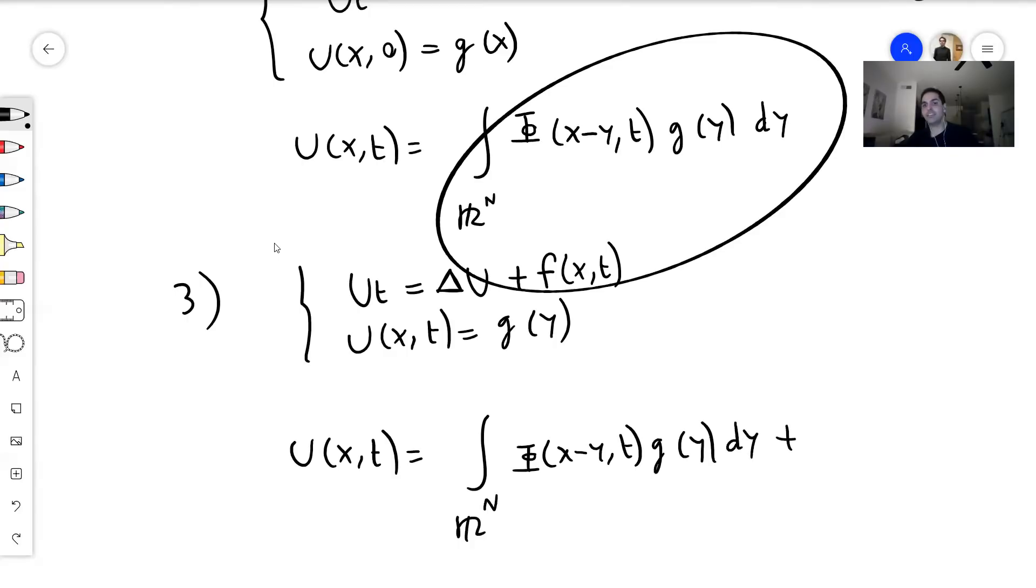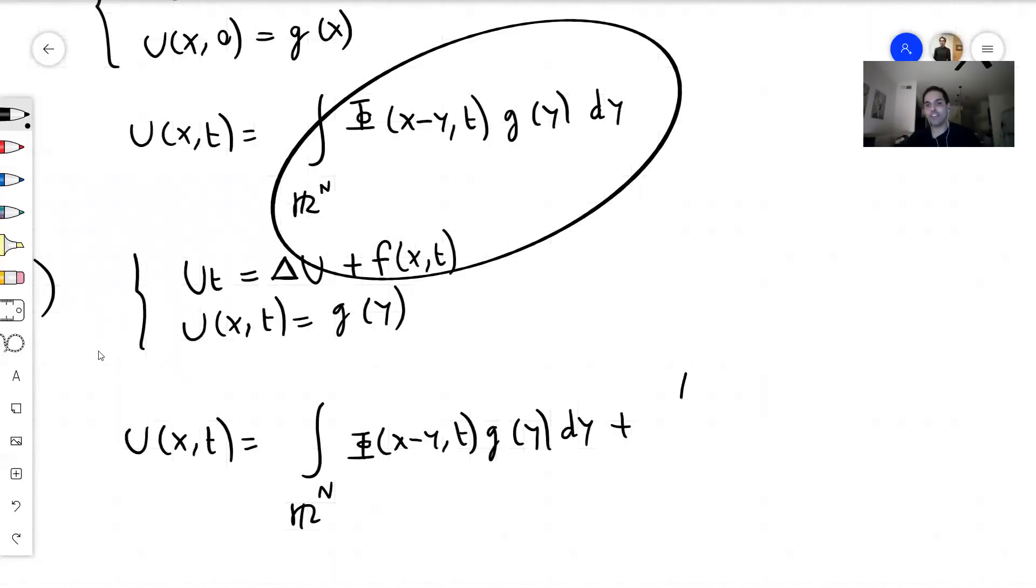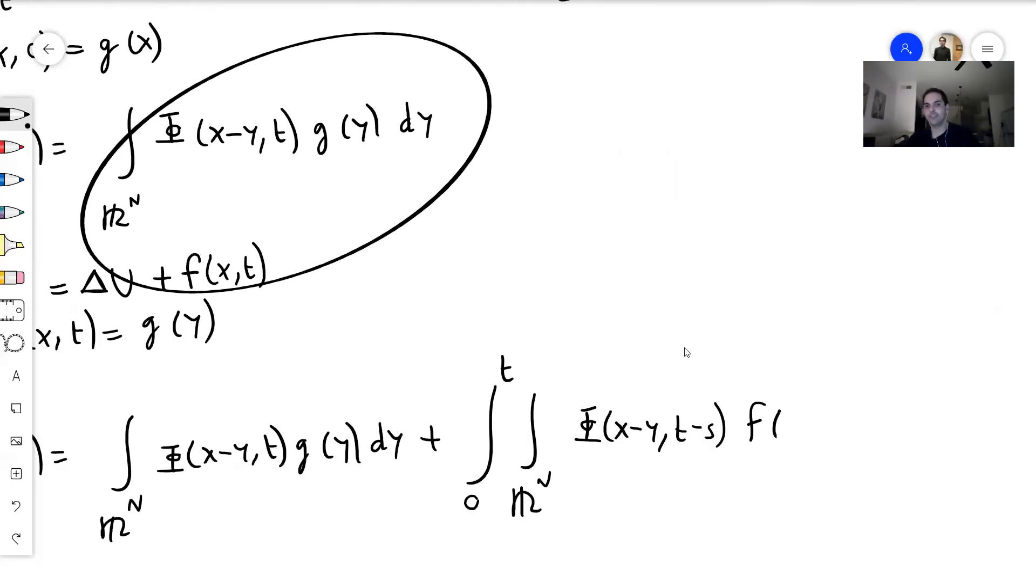plus the full convolution. So phi convolved with f, so really integral from 0 to t, integral over R^n of phi(x-y, t-s) f(y,s) dy ds. And again, make sure that the sum here is x, and the sum here is t. It is the full convolution.